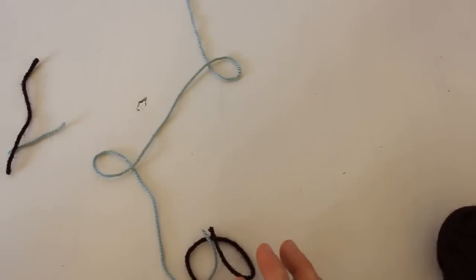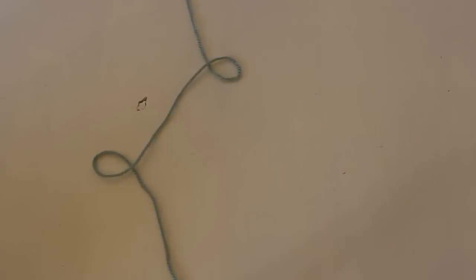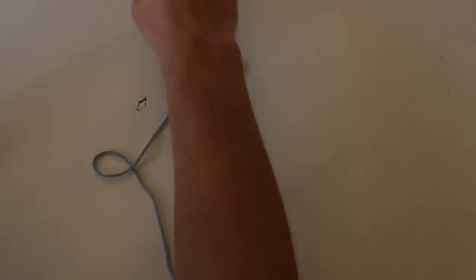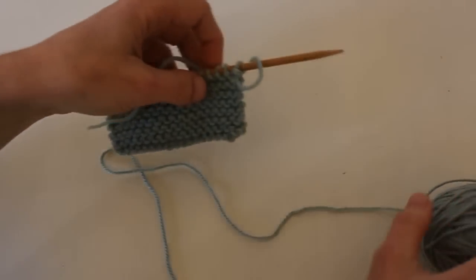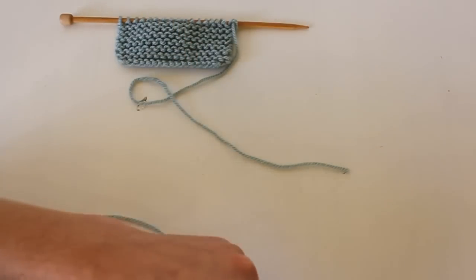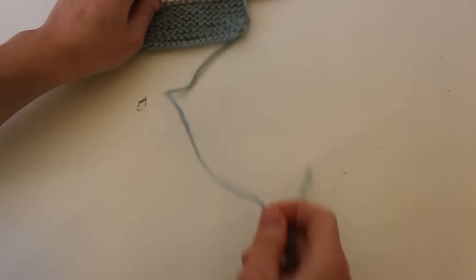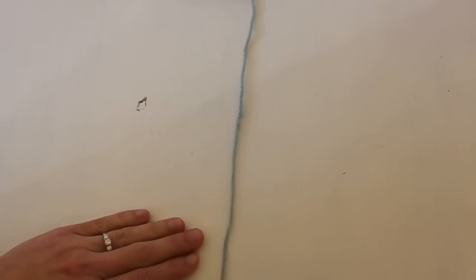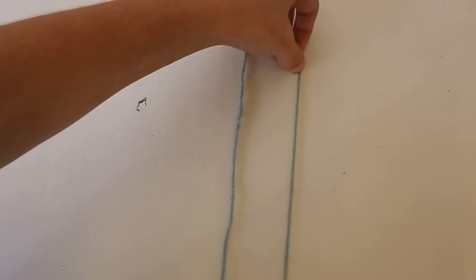So I'll quickly attach to our little swatch here, doing the magic knot again, so that you can see how seamless this knot actually is. So I'll set up again. This is our working yarn. This is our new yarn.